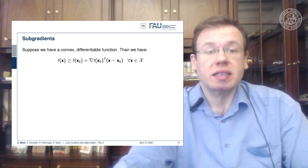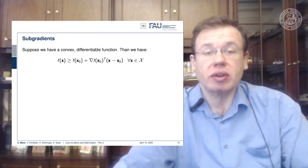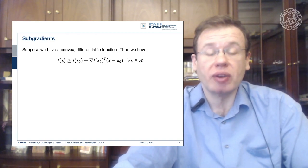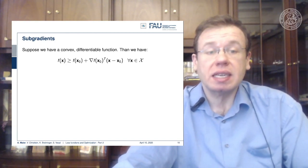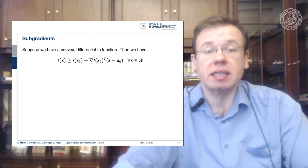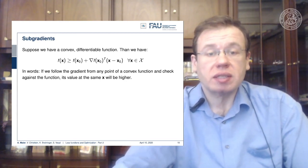Luckily, subgradients saved the day. So let's introduce this concept. In order to do so, we have a look at convex differentiable functions, because on those we can say that at any point f of x, we can essentially find a lower bound of f of x that is indicated by f of x0 plus the gradient at f of x0 multiplied with the difference from x to x0.